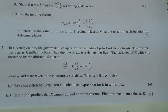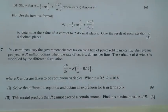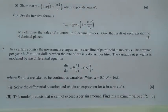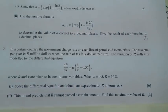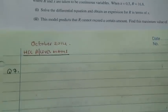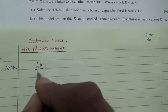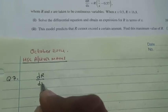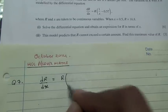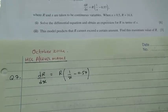Solve the differential equation and obtain an expression for R in terms of X. This model predicts that R cannot exceed a certain amount. Find this maximum value of R. The question carries 9 marks. Let's do it. We have the differential equation dR/dx equals R times 1 over X minus 0.57.